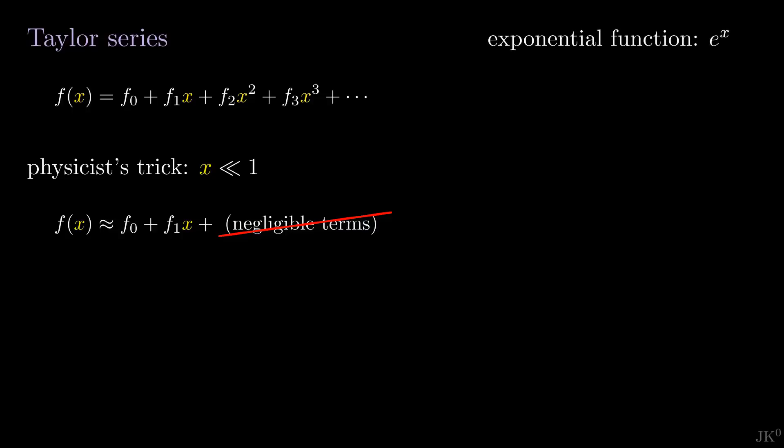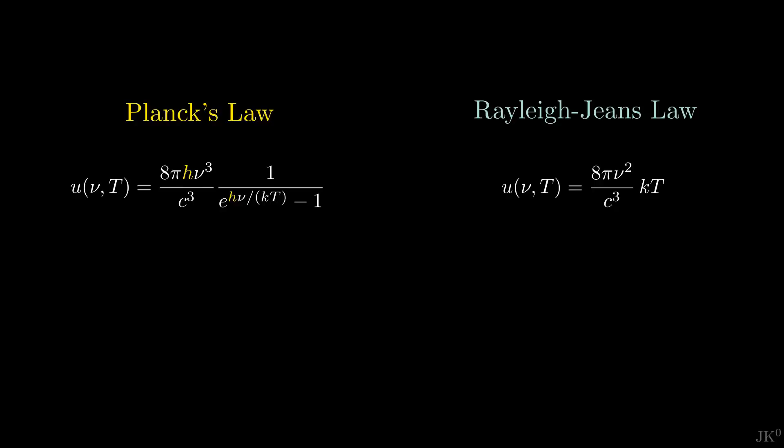For instance, the Taylor series of the exponential function e to the x is this infinite sum. If x is a small quantity, we can simply keep the first two terms of the series, because each of the following terms becomes smaller than the previous one. Let me show you how Planck used this in 1906.